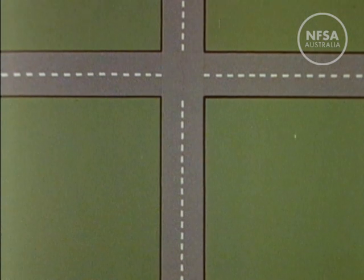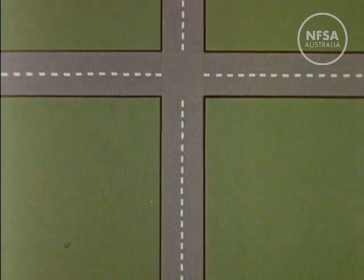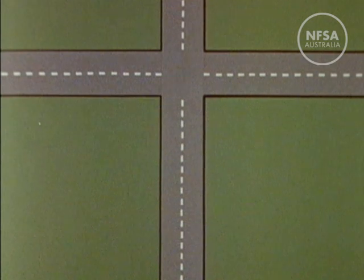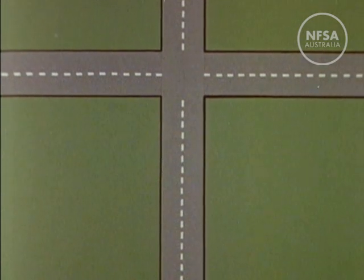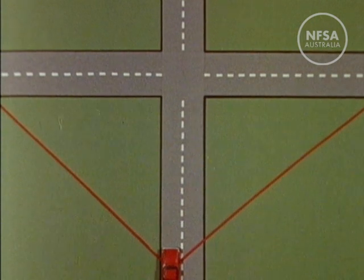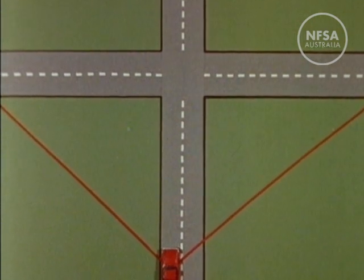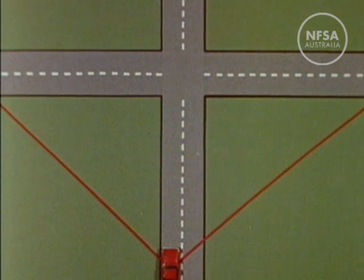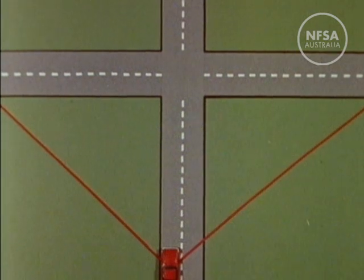One thing we need to consider at this stage is the factor points of vision. Assume that the roads here are perfectly flat, that there are no buildings or other obstructions in the way. We will have unobstructed forward vision to the horizon. Hazards can be observed well in advance and suitable measures taken to avoid any mishap.